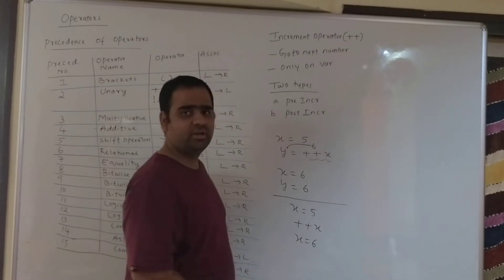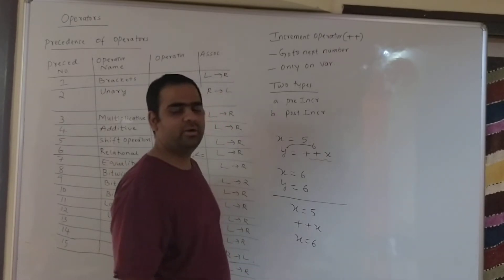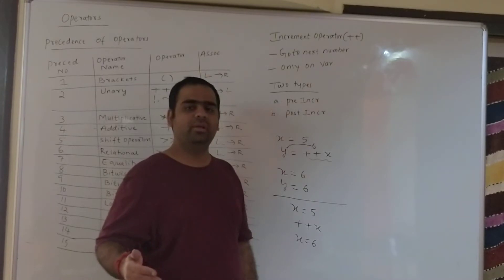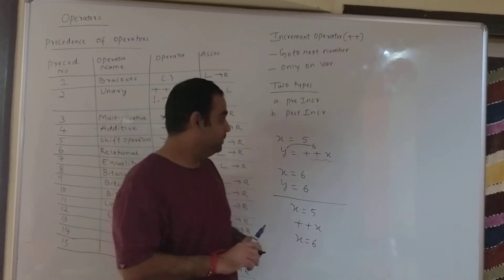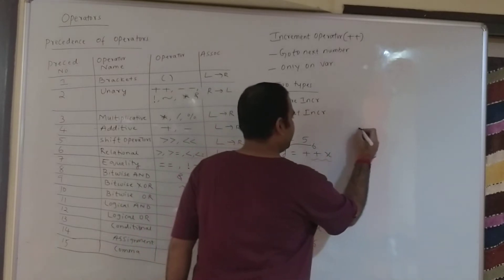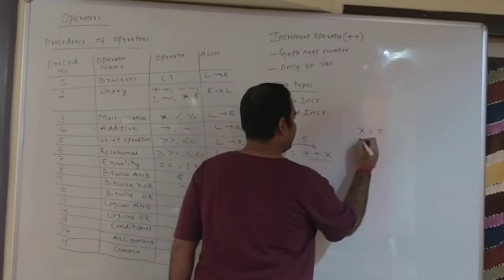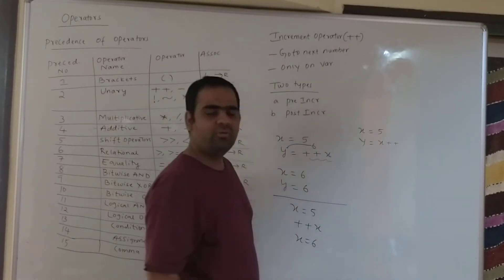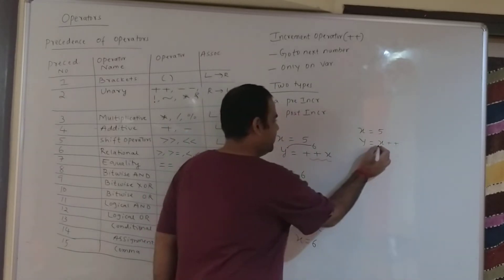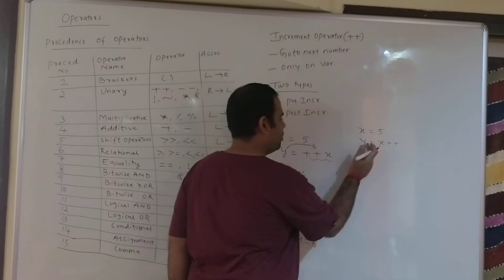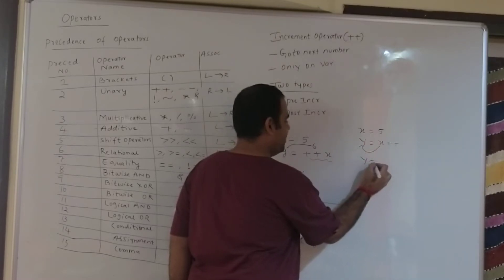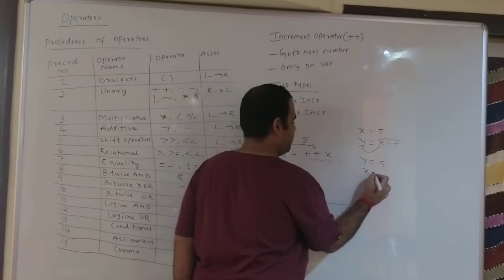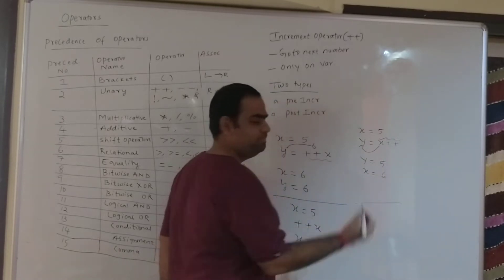The second type is the post-increment operator. In post-increment, the operator plus plus appears after the operand. For example, x is equal to 5 and y is equal to x plus plus. First, the assignment takes place — x is copied to y, so the value of y becomes 5. Next, the incrementation takes place and the value of x becomes 6.